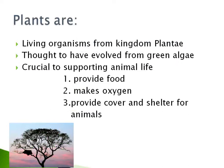First off, plants are living organisms of the kingdom Plantae. There are many different types of plants, from flowering plants to conifers to ferns to even mosses. Plants get most of their energy from sunlight — this process is called photosynthesis. Plants have evolved from green algae and are crucial to supporting animal life. They provide animals with food, make the atmosphere friendly by releasing oxygen, and they even provide cover and shelter for animals.